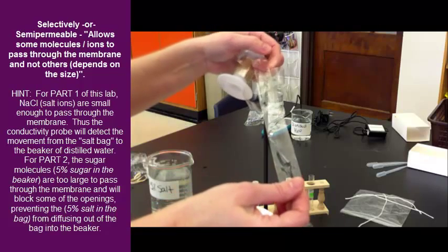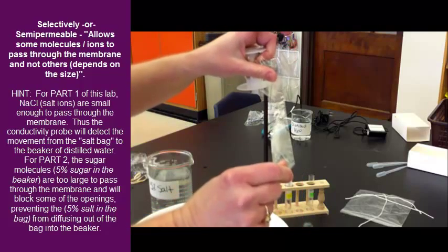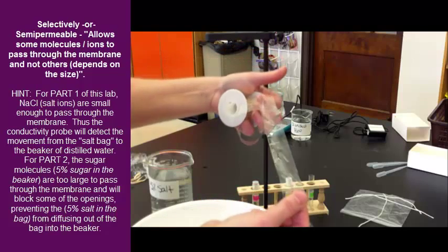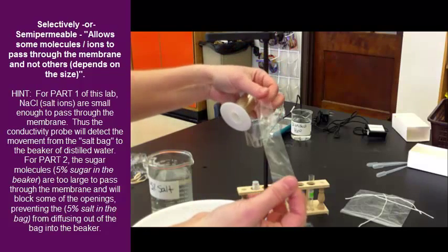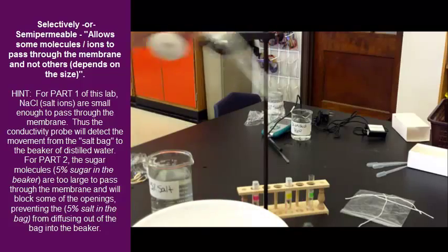So, if you're watching the video, and this may help with your write-up, it will allow salt to pass through because it's smaller, and then the sugar will not be able to pass through. It's too large to go through the openings.